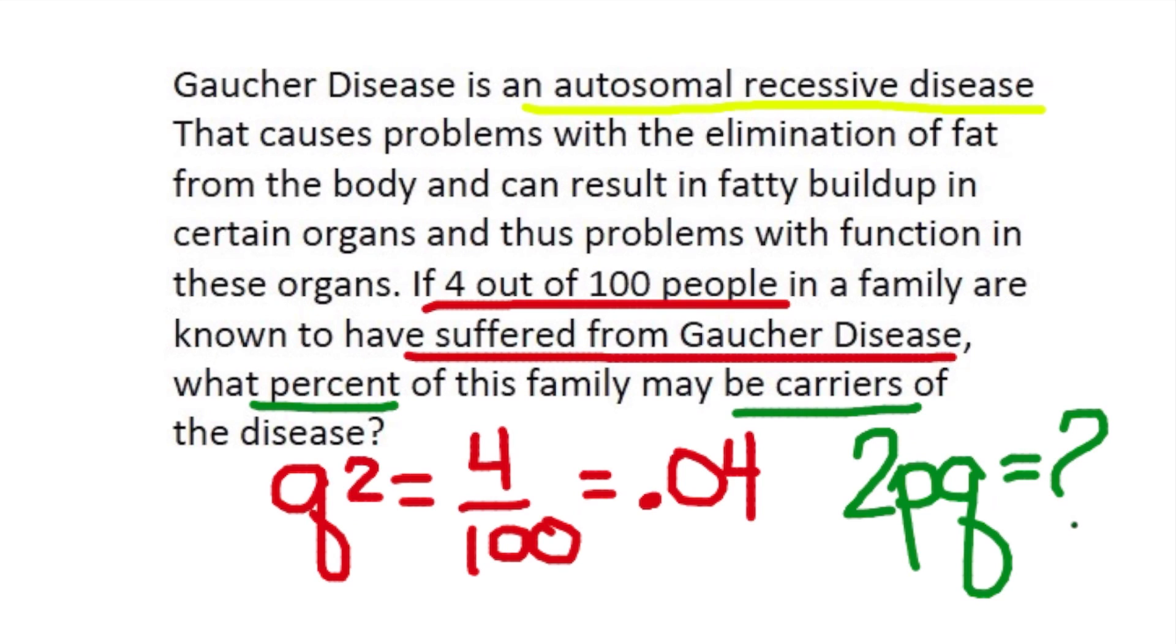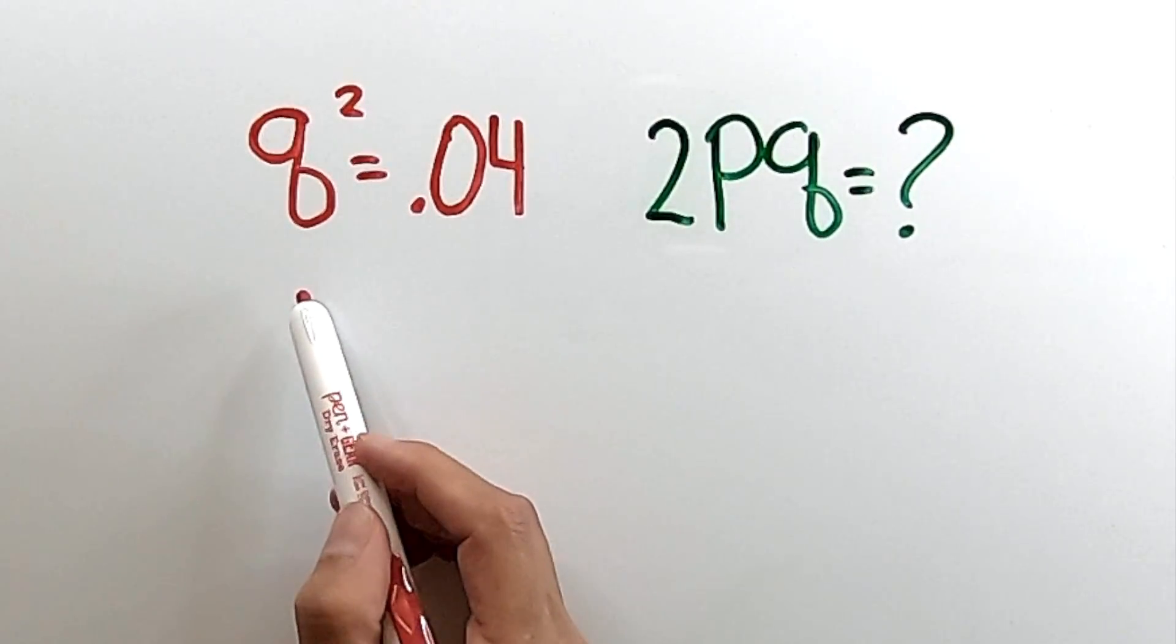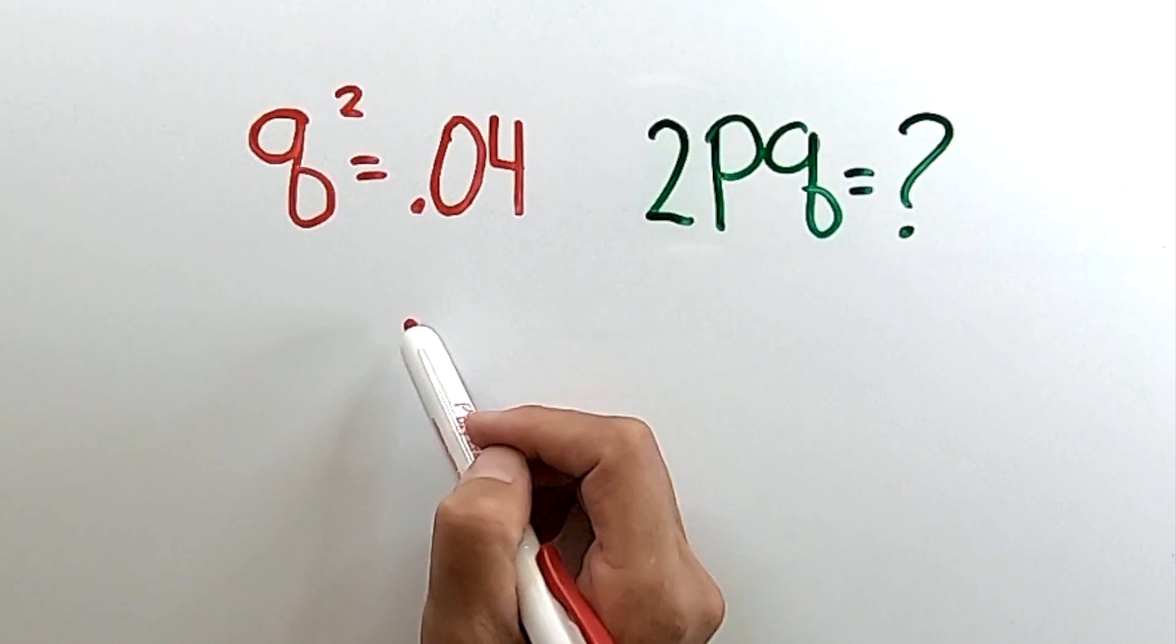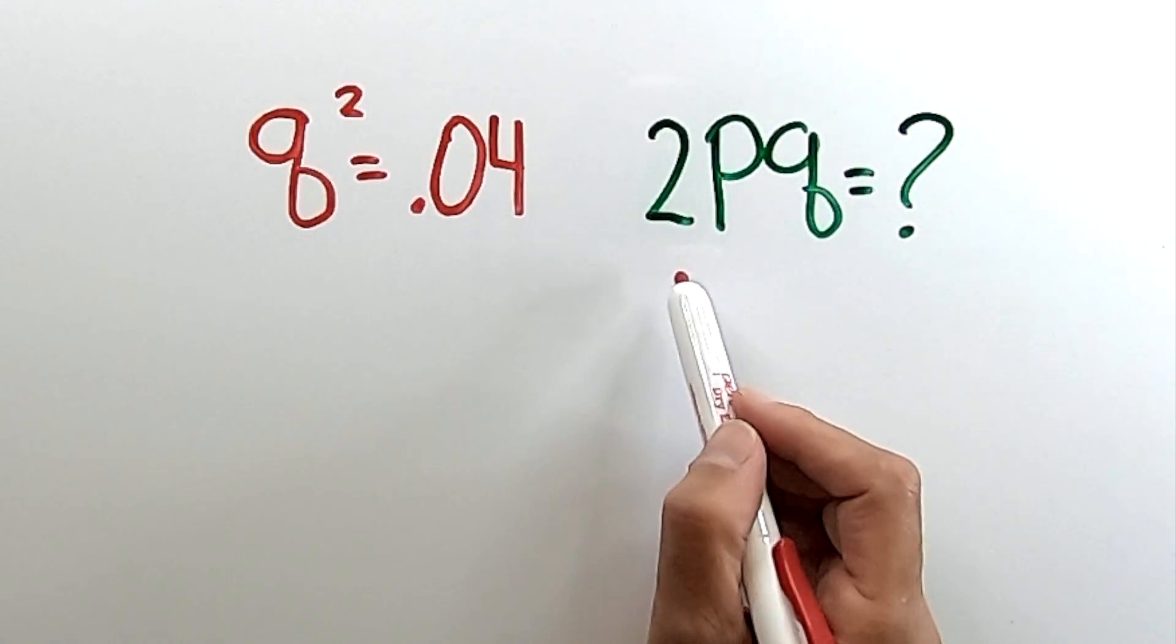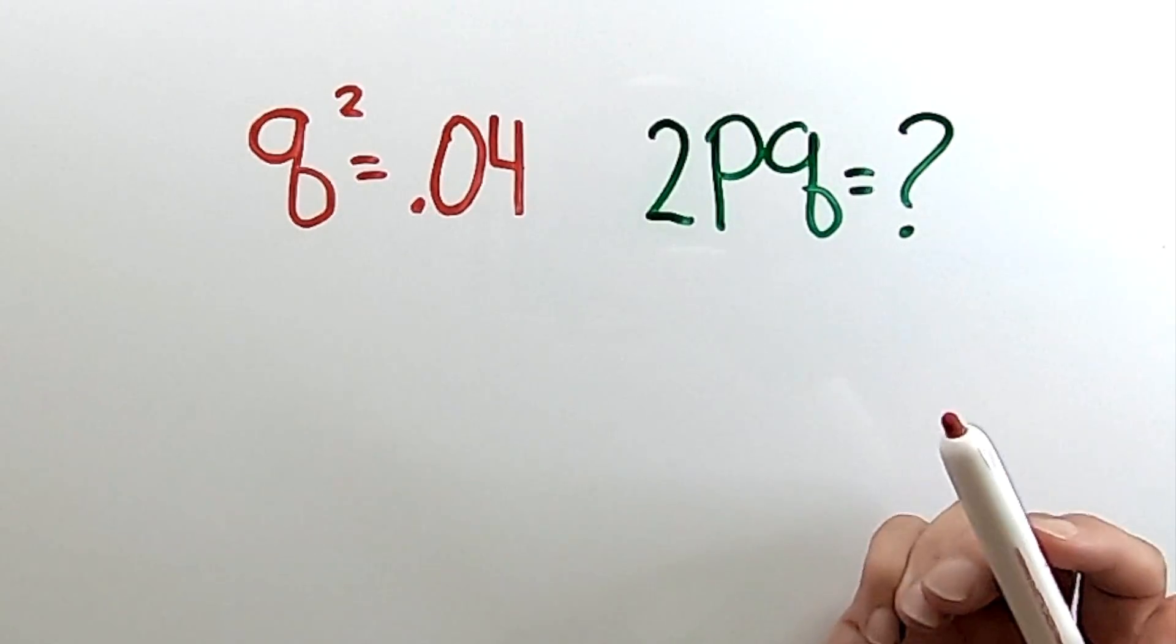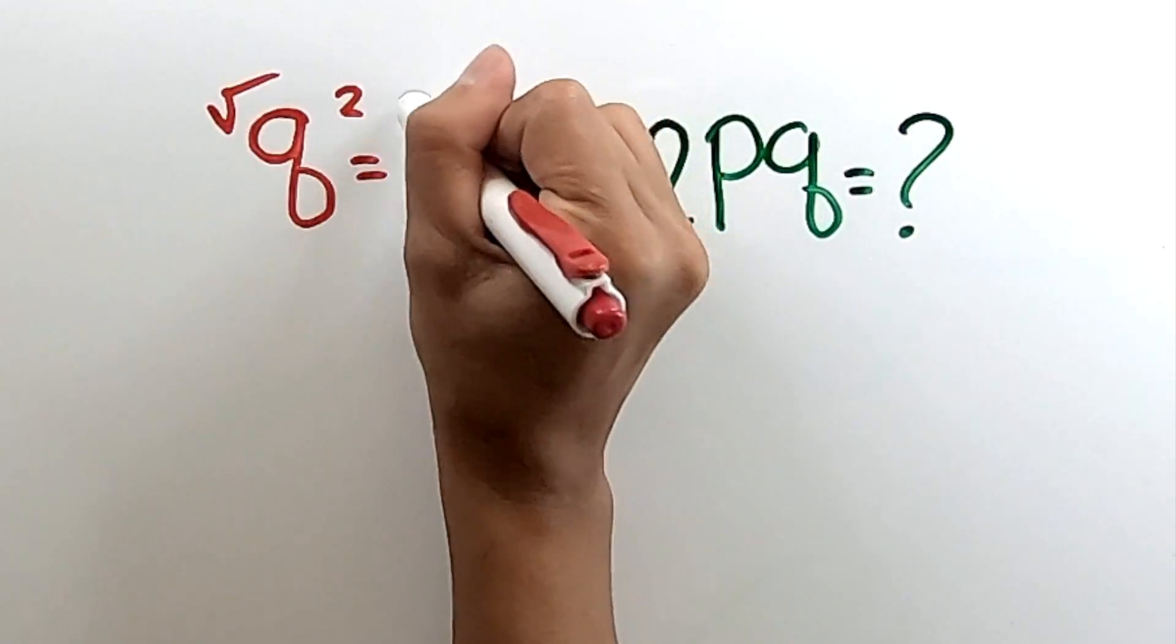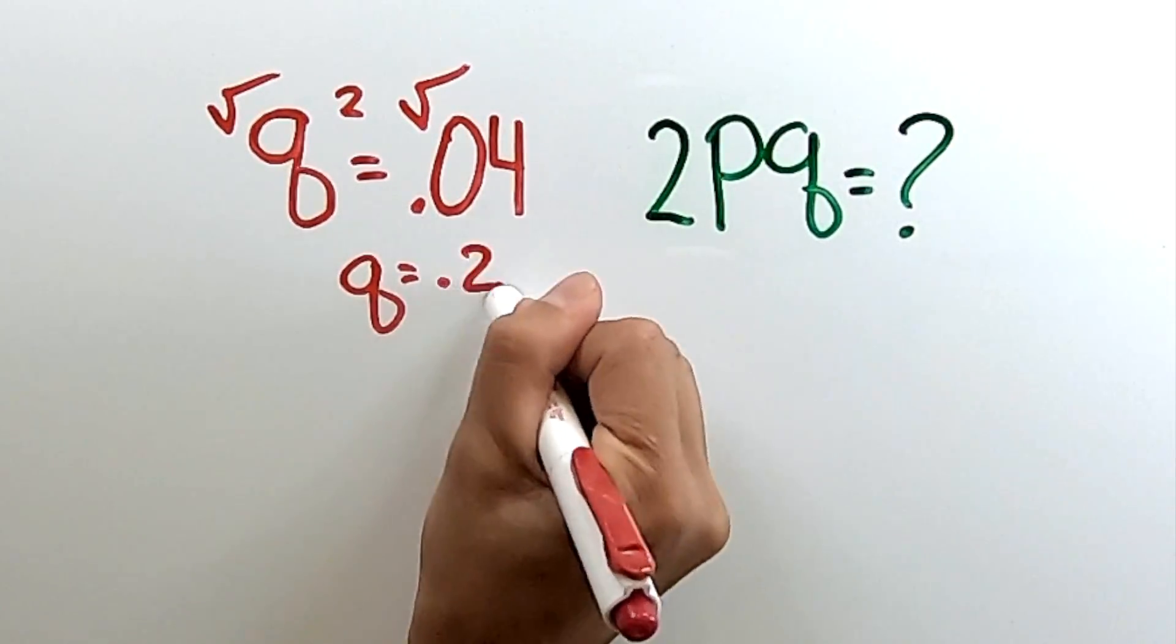So now let's just do the math. So we were given the homozygous recessive phenotype, those who suffered, q² at 0.04, and we're asked for the carrier percentage, which is same as the heterozygous genotype, 2pq. So how do we get this one started? Well, just the same way. Let's square root both sides to get q = 0.2.